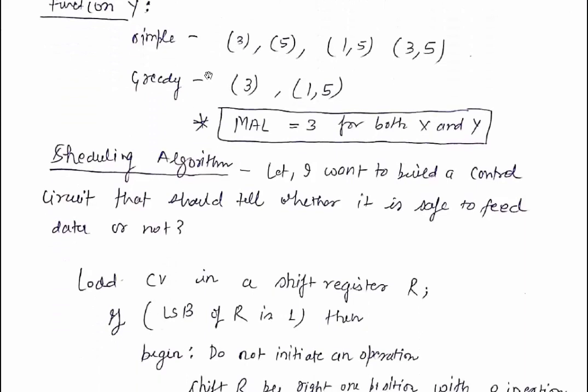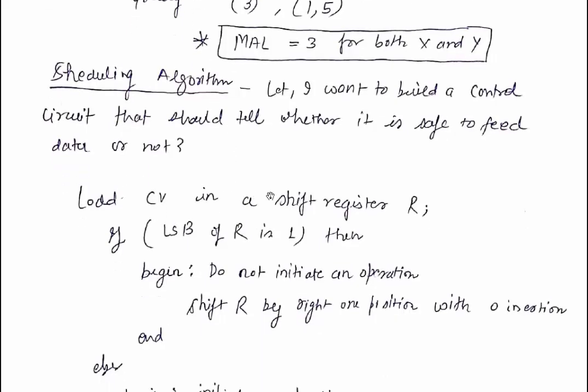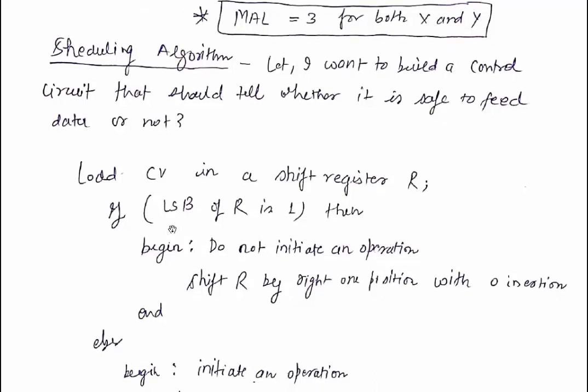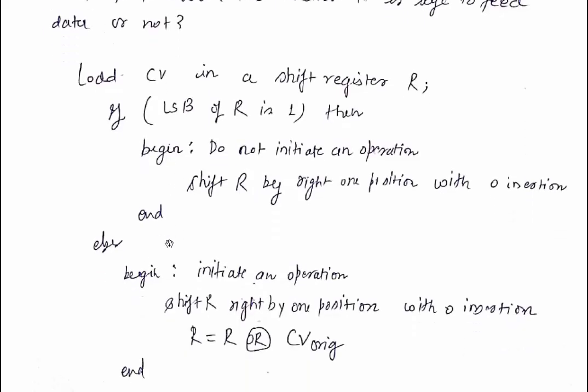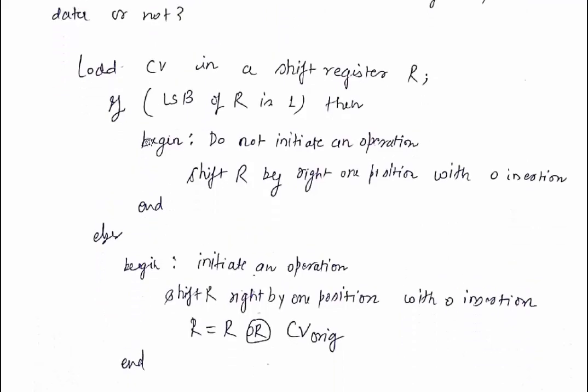The scheduling algorithm: to build a collision-free control circuit, first load the collision vector into a shift register R. If the least significant bit of R is 1, do not initiate the operation. Shift R right with 0 insertion and then OR with the initial collision vector. Always take the OR with the initial collision vector only, not an intermediate result.